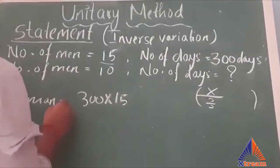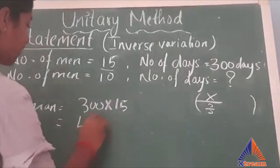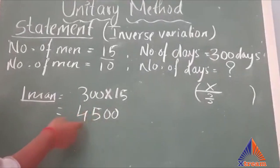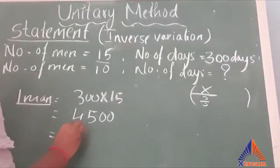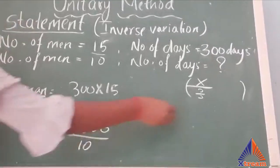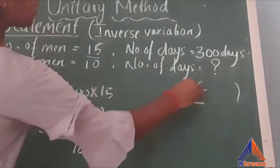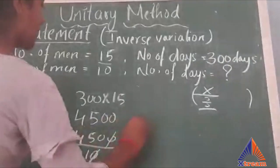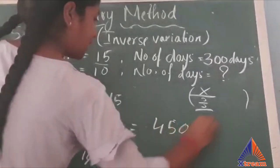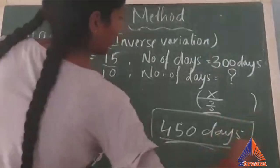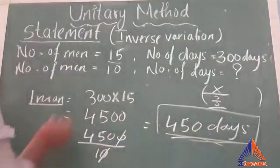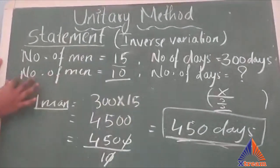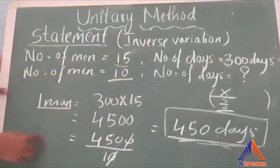So first, multiplication: 300 multiplied by 15 equals 4,500 days — it takes 4,500 days for one man to complete the work. Now we divide to get the work for 10 men: 4,500 divided by 10 equals 450 days. So 10 men can complete the work in 450 days. This is how we find the answer for an inverse variation question using the statement method.